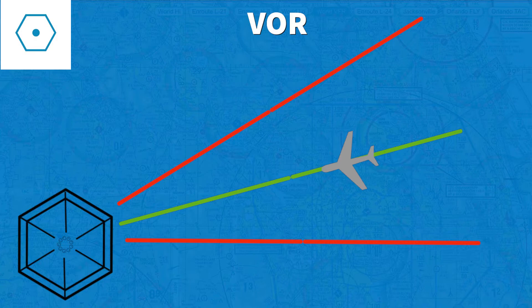These that I'm calling degrees are called radials in aviation language, just like the spokes of a bike where the VOR is in the hub and it transmits signals on all the 360 degrees, or spokes, or in aviation, radials.